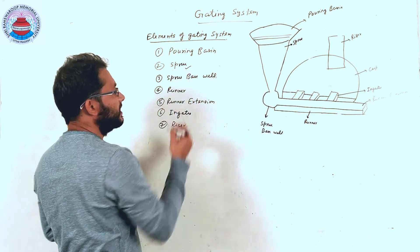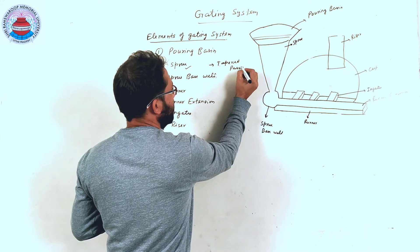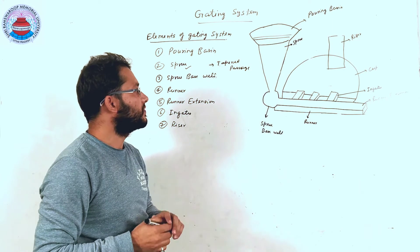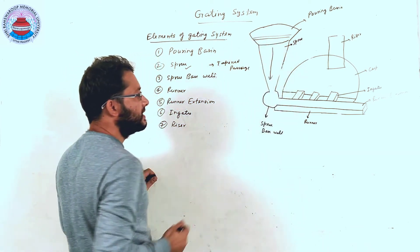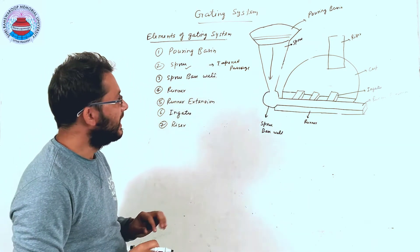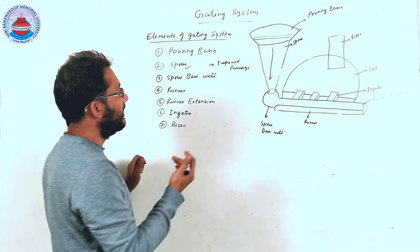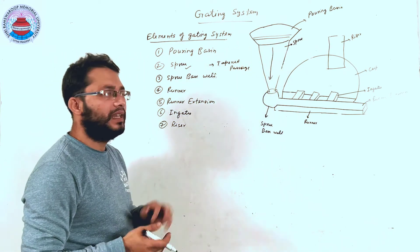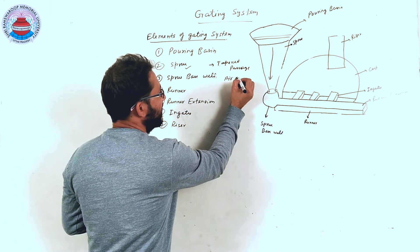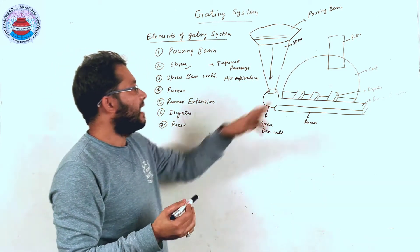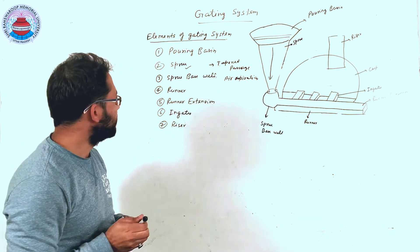The second element is the sprue. A sprue is a tapered passage through which molten material enters from the pouring basin up to the sprue base well. It is kept tapered because as molten material comes down it has velocity, and to maintain that velocity the cross-sectional area at the bottom should be less. If it is not tapered, it may lead to air aspiration — an effect which causes trapping of atmospheric air into the sprue. So the sprue is designed to avoid the air aspiration effect.